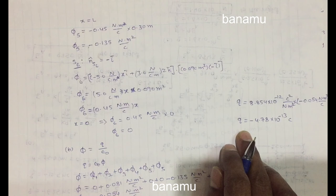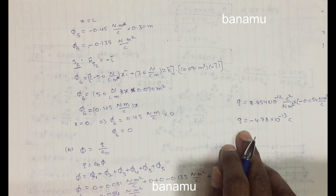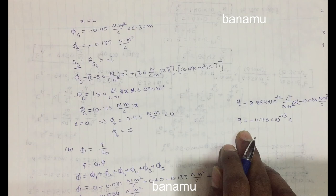The negative sign indicates that the electric flux entering the cube is taken as negative, while flux exiting the surface is positive. Therefore, the total charge enclosed inside the cube is −4.78 × 10⁻¹³ C.